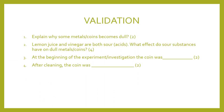Validation: learners will be expected to answer the following questions. The first question will be to explain why some metals or coins become dull. Lemon juice and vinegar are both sour acids — what effects do sour substances have on dull metals and coins? At the beginning of the experiment, the coin was dull, and after cleaning, the coin was shiny.